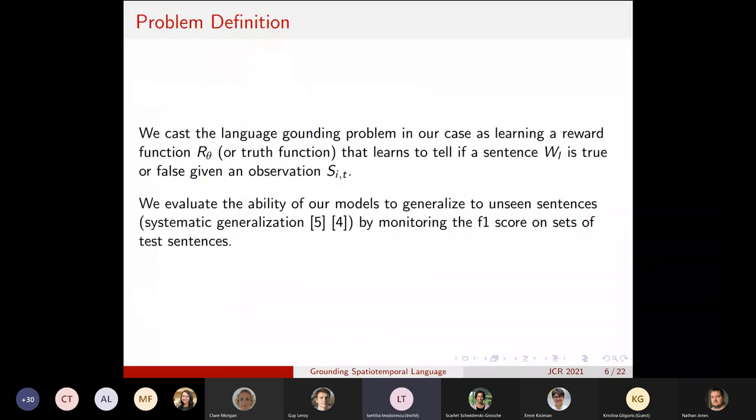So we cast this language grounding problem in our case, not as a reinforcement learning problem, but more narrowly as learning a reward function, R of theta, as a deep neural network. And you can see this reward function also as a truth function that has to learn to tell if a sentence, a given sentence W_L, is true or false given an observation S of I and T.